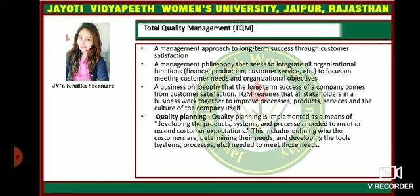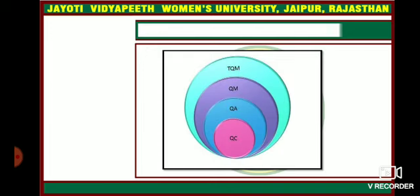What is total quality management? TQM is the management approach to long-term success through customer satisfaction — a management philosophy that seeks to integrate all organizational functions such as finance, production, and customer service to focus on meeting customer needs and organizational objectives. TQM requires that all stakeholders in a business work together to improve processes, products, services, and the culture of the company itself. Quality planning is implemented as a means of developing the product systems and processes needed to meet or exceed customer expectations, including defining who the customers are, determining their needs, and developing the tools needed to meet those needs. In summary, total quality management is the supreme level, encompassing quality management, quality assurance, and quality control.